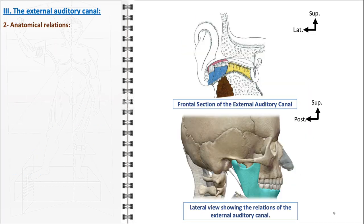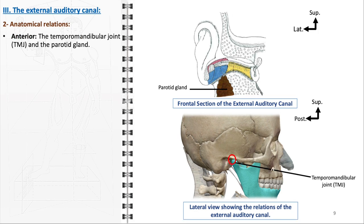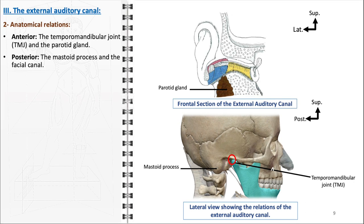The external auditory canal is situated in a complex anatomical environment, surrounded by various structures. Anteriorly, the canal is closely associated with the temporomandibular joint and the parotid gland. The proximity to the temporomandibular joint means that movements of the jaw can sometimes be felt or heard in the canal. The parotid gland also lies in close relation to the canal. Posterior to the canal is the mastoid process, a part of the temporal bone, providing structural support. In addition, the facial canal, which carries the facial nerve, runs parallel to the external auditory canal — a relationship that is clinically significant, as infections affecting the ear can sometimes impact the facial nerve.